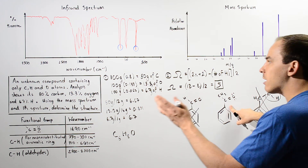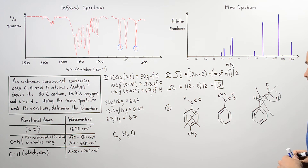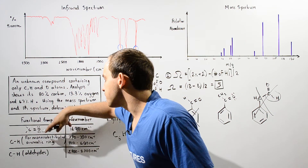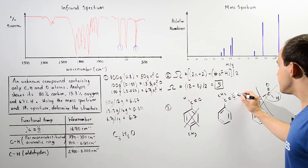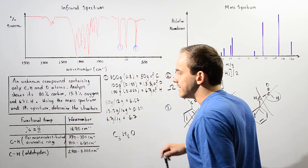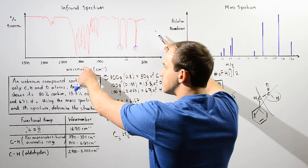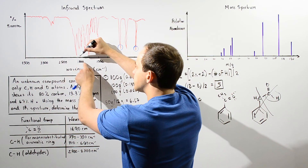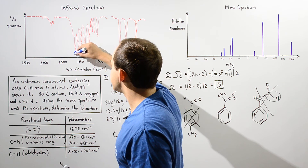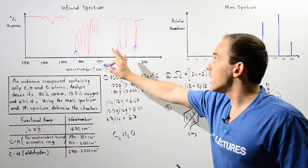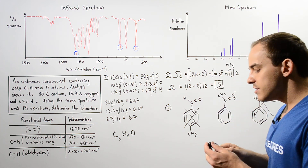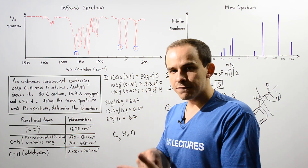Finally, let's confirm that our compound is the ketone structure. A carbonyl group (C=O) in a ketone appears around 1690 cm⁻¹. Looking at the X-axis of the infrared spectrum between 1500 and 2000 cm⁻¹, there is in fact a peak at approximately 1690 cm⁻¹. Based on the infrared spectrum, we confirm that the unknown compound is acetophenone — a benzene ring with a carbonyl and methyl group — determined using the molecular formula and spectral analysis.